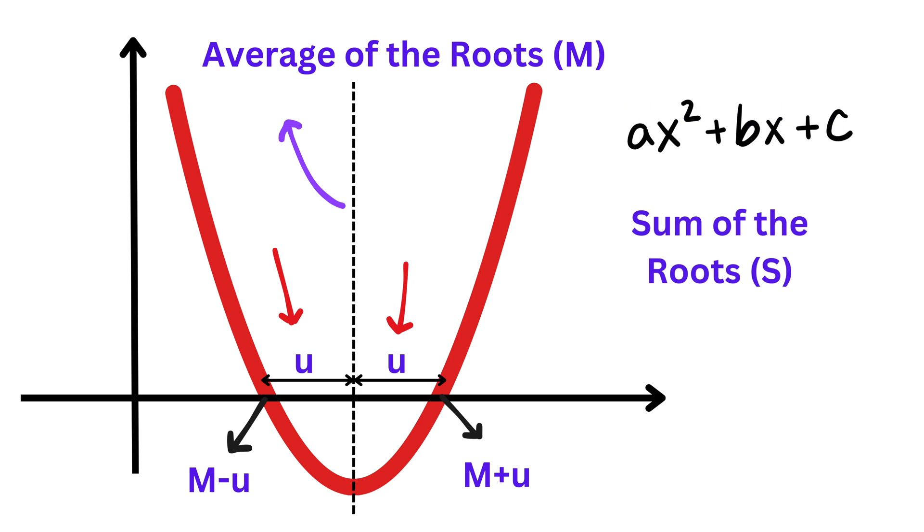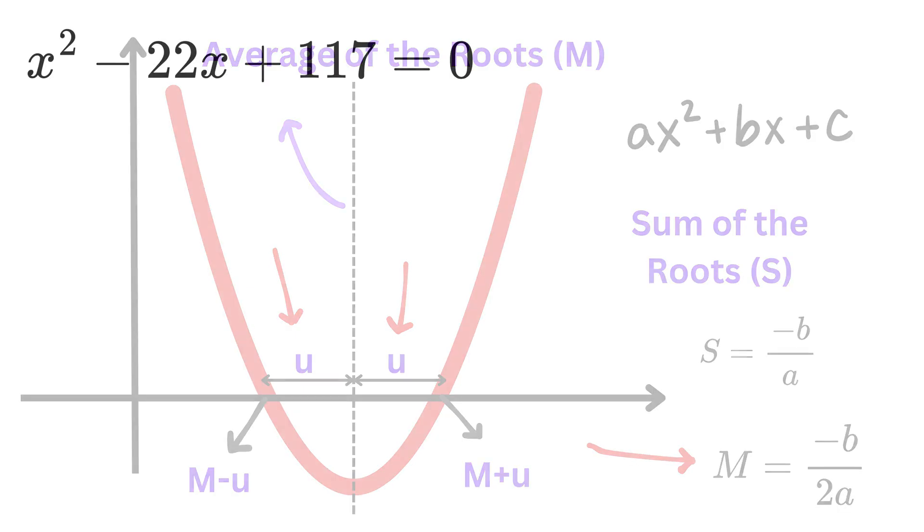And getting the average of the roots is easy, right? We know the sum of the roots is always minus B over A. So, the average will be minus B over 2A.